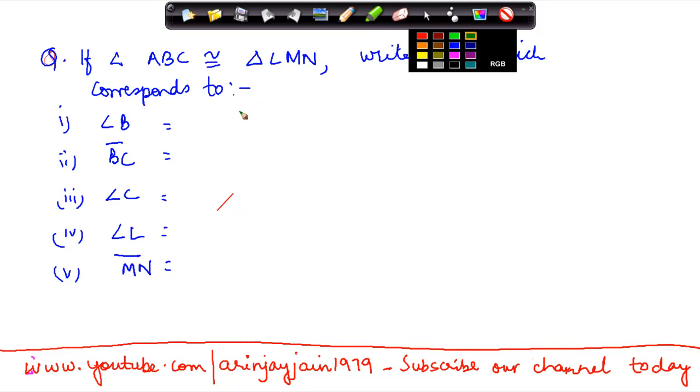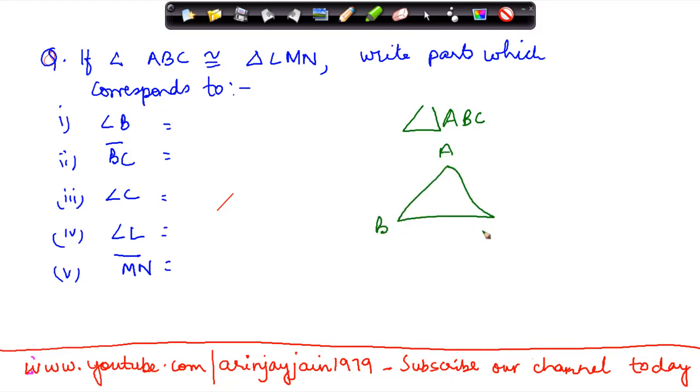We have discussed this before that if two triangles ABC, let's draw them down, is congruent to LMN, LMN would come like this, that the corresponding sides and the corresponding angles are equal.